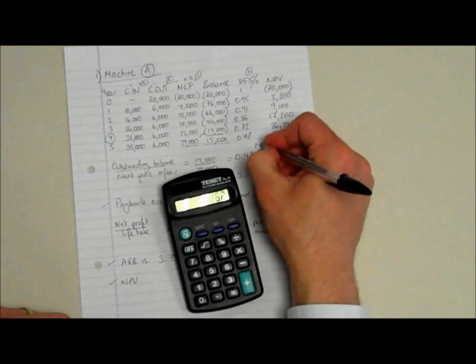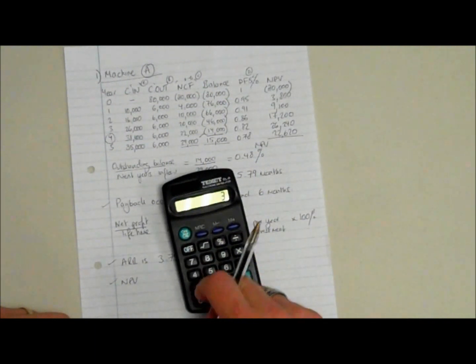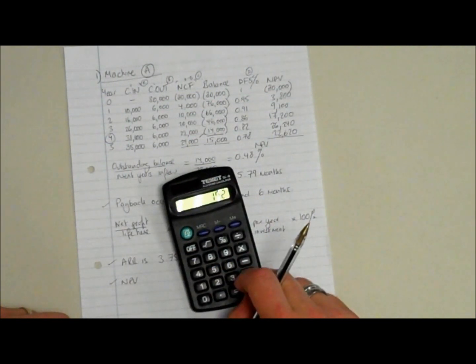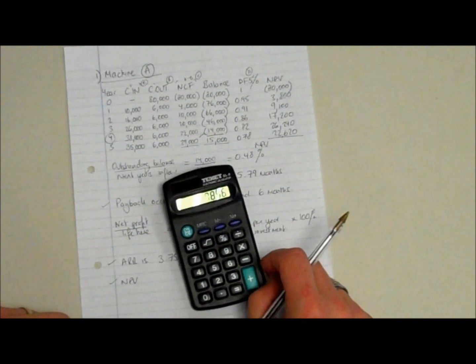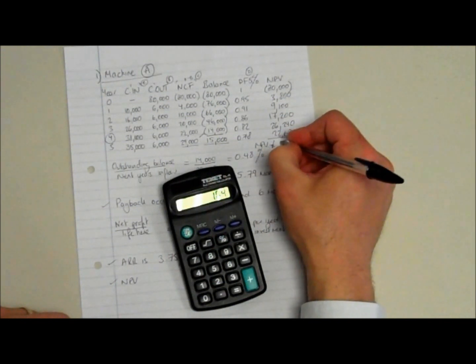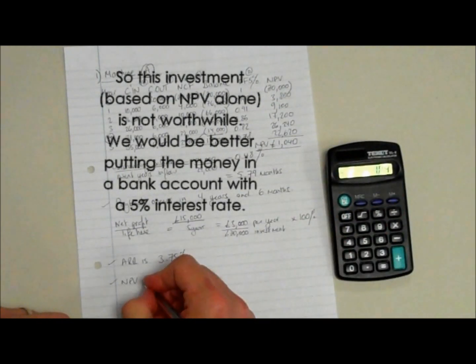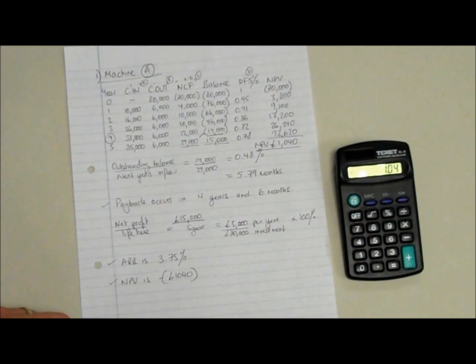If we add all those up, that will give us our net present value. Easy way to add up positives and take away the negative. 3,800, 9,100, 17,200, 26,240, 22,620. But we must take away that initial 80,000. So we actually end up with a net present value of negative 1,040 pounds. What that means is we're actually 1,040 pounds worse off in this project than just putting the money at 80,000 in the bank at 5% for five years.